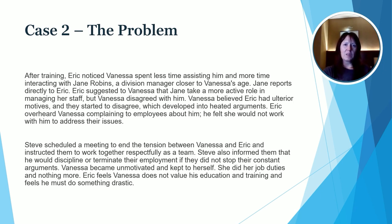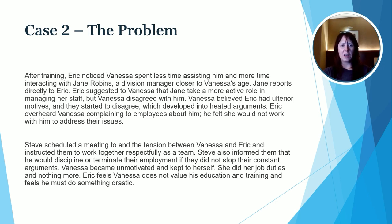Steve talked about disciplining or terminating them if they did not stop their constant arguments. As a result, Vanessa became quite unmotivated and started keeping to herself — she did her job but nothing more. Eric, meanwhile, feels that Vanessa doesn't really value his education and training, and he has strong feelings about the direction they need to go in working together.